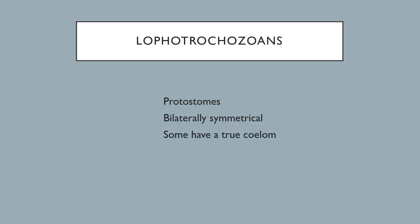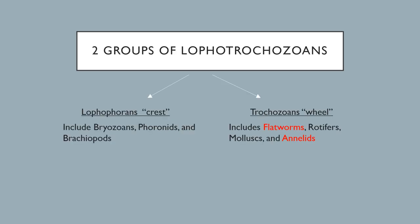We're first going to look at a group called the Lophotrochozoans. These are protostomes with bilateral symmetry — you can cut them into definite right and left halves — and some have a true coelom with mesodermal lining. Within Lophotrochozoans, there are lophotrochozoans and trochozoans. The trochozoan group includes flatworms, annelids, molluscs, and rotifers.